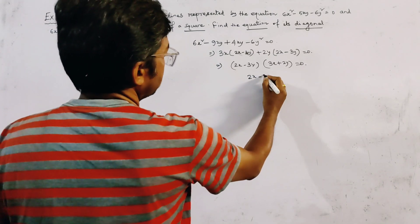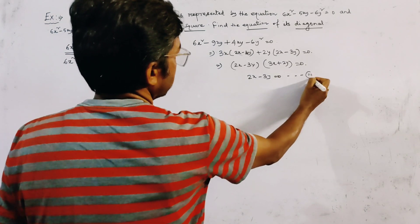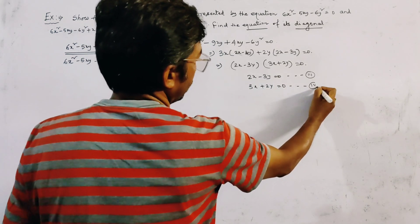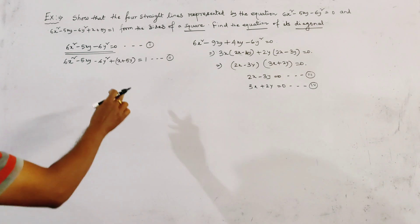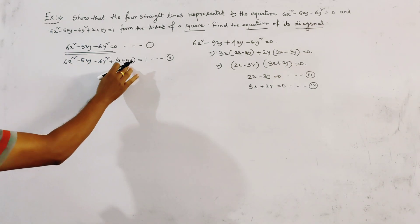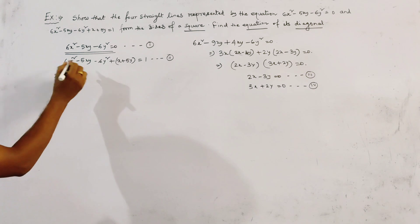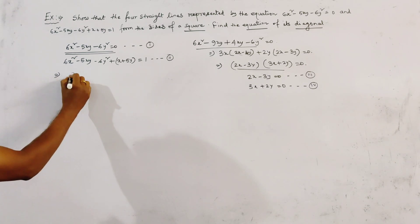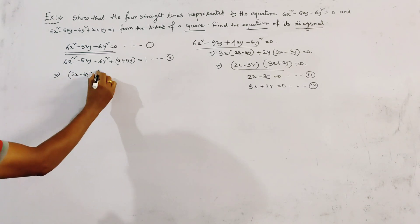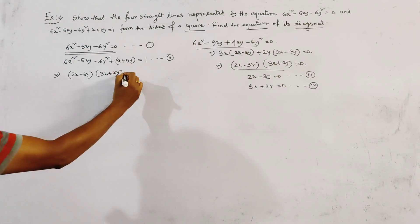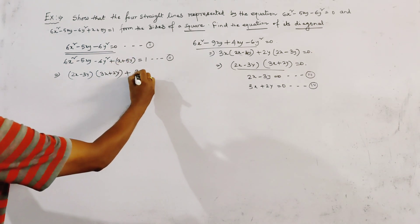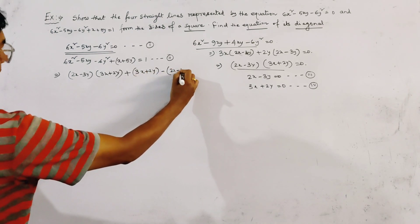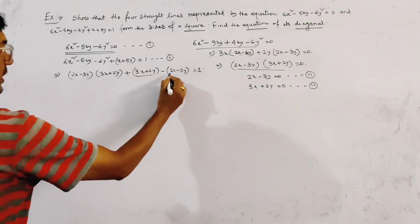So the two lines from the first pair (relation 1) are: line 3: 2x - 3y = 0, and line 4: 3x + 2y = 0. For the second pair, we rearrange so that the right-hand side becomes zero, writing 3x + 2y - 1 terms together.